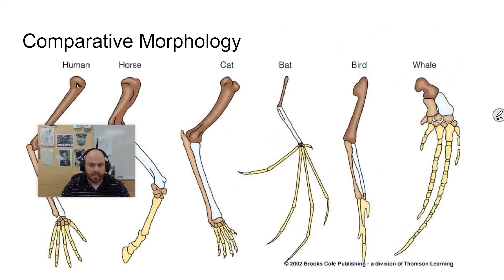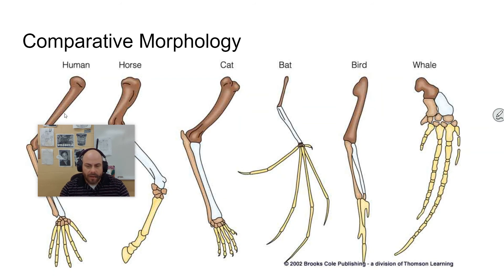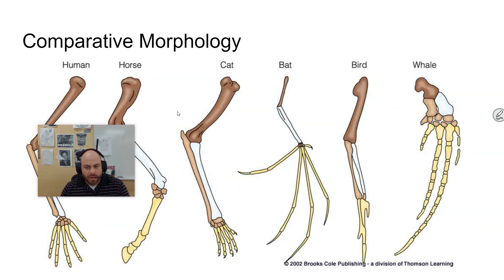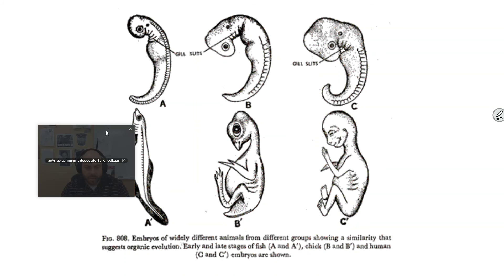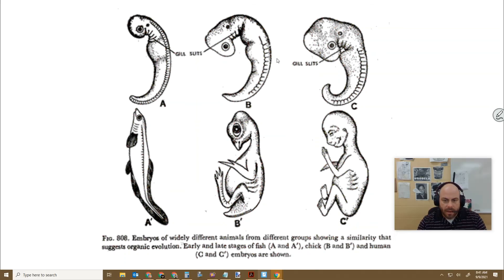How are these things decided? One method is comparative morphology, where organismal structures look similar to one another but don't necessarily have a similar function. You can compare the shape, size, and structure of different pieces to show their relation to one another. There's also comparative embryology, which is a form of comparative morphology — you can see the different shapes of embryos and how things change over time, even from the embryonic state.